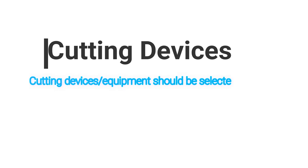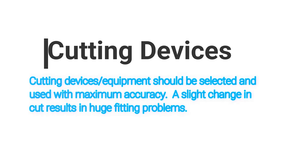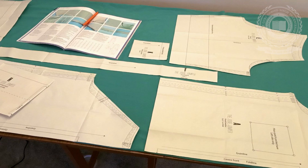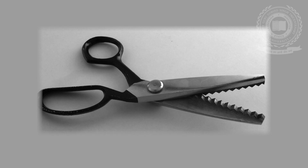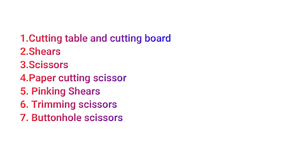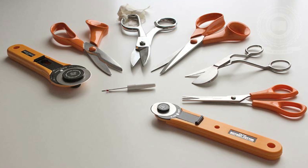Then we have cutting devices. Cutting devices or equipment should be selected and used with maximum accuracy, as a slight change in cut results in huge fitting problems. We have the following cutting devices: cutting table and cutting board, shears, scissors, paper cutting scissors, pinking shears, trimming scissors, and button hole scissors. This picture shows the different types of cutting tools.